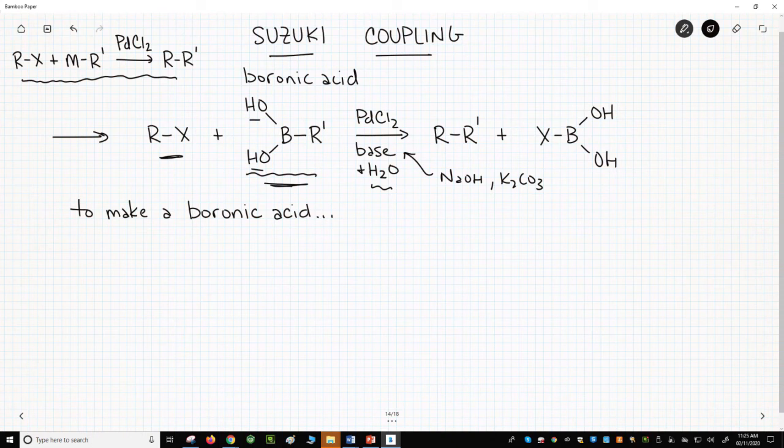How do you make boronic acids? You normally start with a halide, R prime X. React the halide with magnesium or lithium to make the Grignard or organolithium reagent.